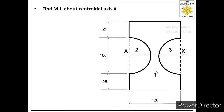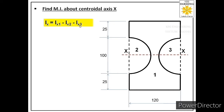After this, the moment of inertia of this composite area about the centroidal axis XX will be: Ix = Ix1 minus Ix2 minus Ix3, where Ix1 is the moment of inertia of the rectangular area about the main axis, and Ix2 and Ix3 are the moments of inertia of the two semicircular areas about the main axis.